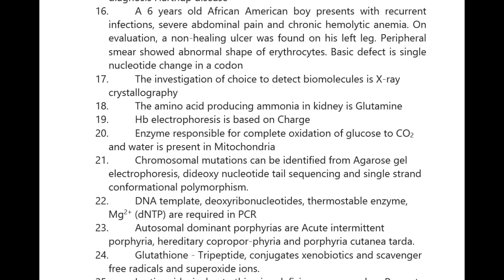The amino acid producing ammonia in kidneys is glutamine. Hemoglobin electrophoresis is based on charge. Enzymes responsible for complete oxidation of glucose to CO₂ and water are present in mitochondria. Chromosomal mutations can be identified from agarose gel electrophoresis, dideoxynucleotide sequencing, and single-strand conformational polymorphism. DNA template, deoxyribonucleotides, and thermostable enzyme with magnesium are required in PCR.